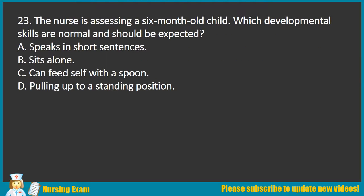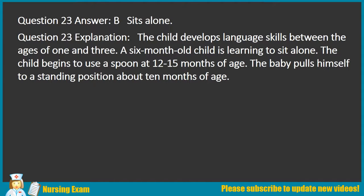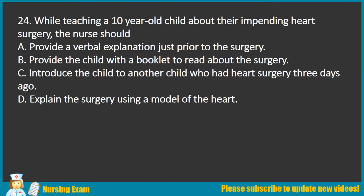Question 23. The nurse is assessing a 6-month-old child. Which developmental skills are normal and should be expected? A. Speaks in short sentences. B. Sits alone. C. Can feed self with a spoon. D. Pulling up to a standing position. Answer: B. Sits alone. Explanation: The child develops language skills between the ages of 1 and 3. A 6-month-old child is learning to sit alone. The child begins to use a spoon at 12–15 months of age. The baby pulls himself to a standing position at about 10 months of age.